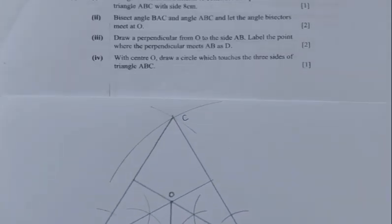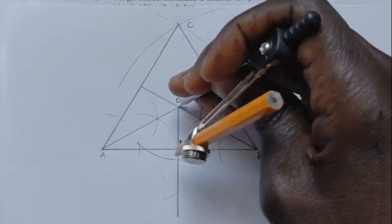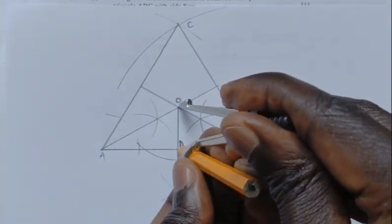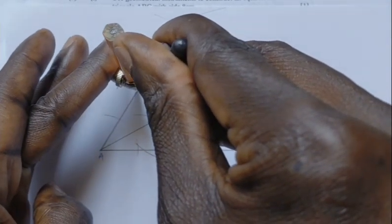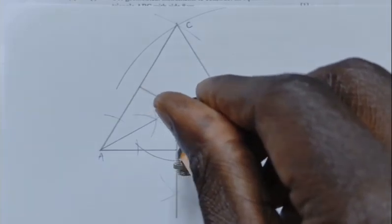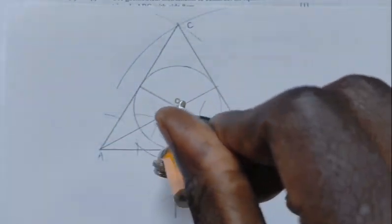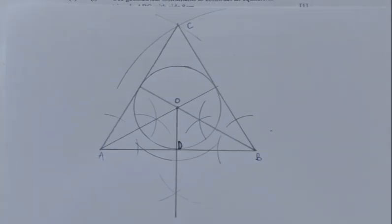Moving on to Roman numeral 4: with center O, draw a circle that touches the three sides of triangle ABC. Using OD as the radius, set the compass to OD and draw a circle centered at O. The circle passes through point D on AB and also touches sides AC and BC, meaning it touches all three sides of the triangle.